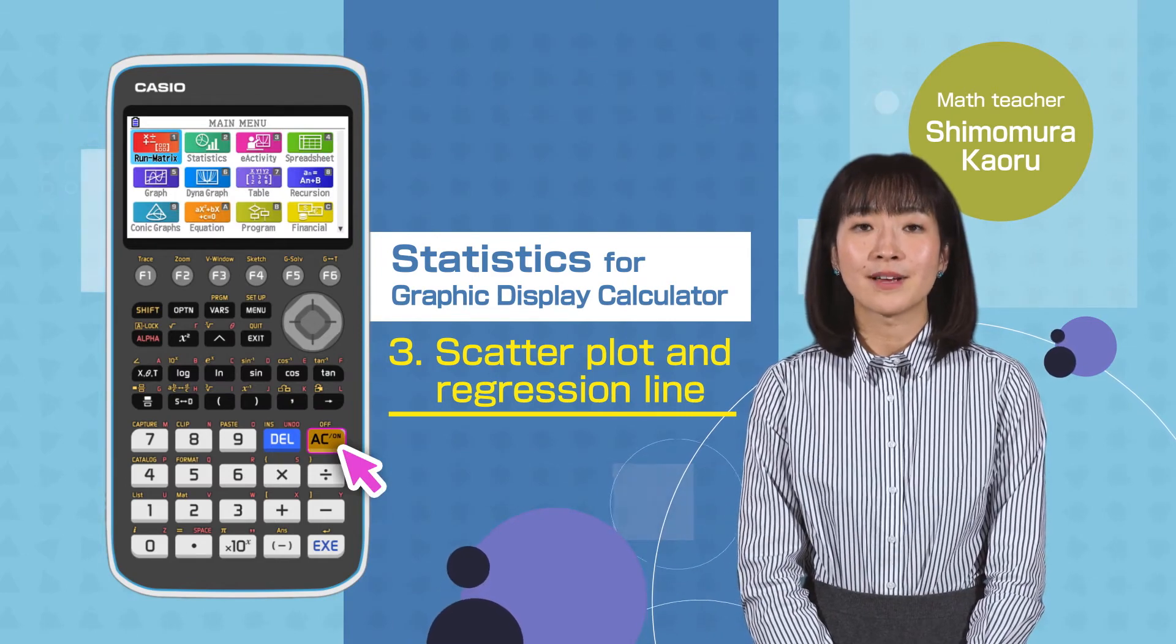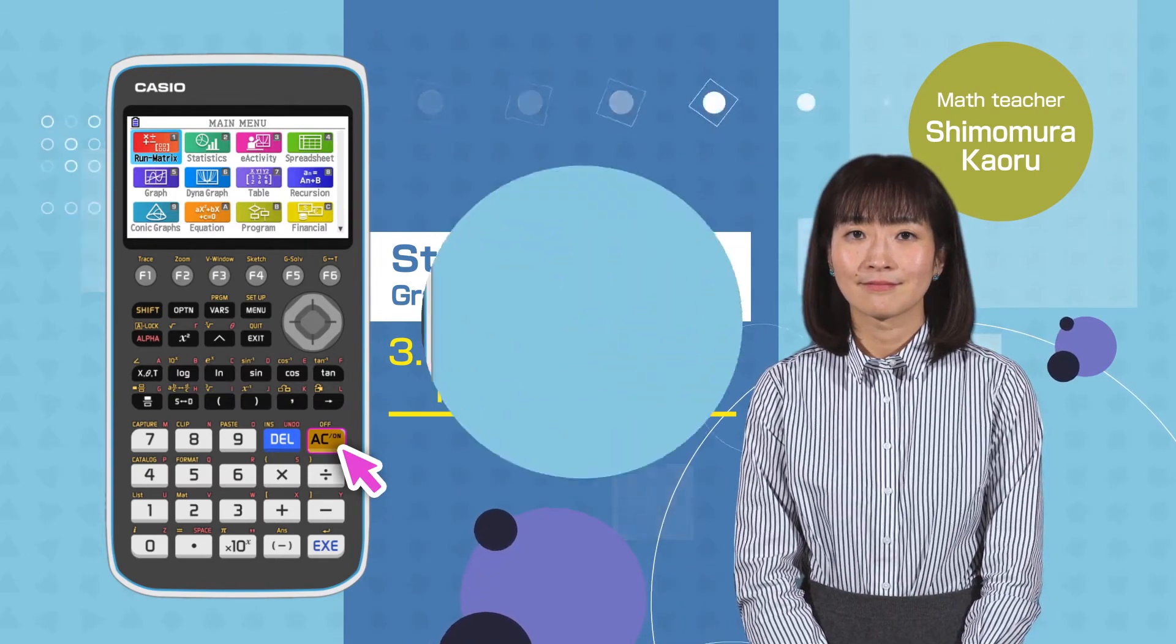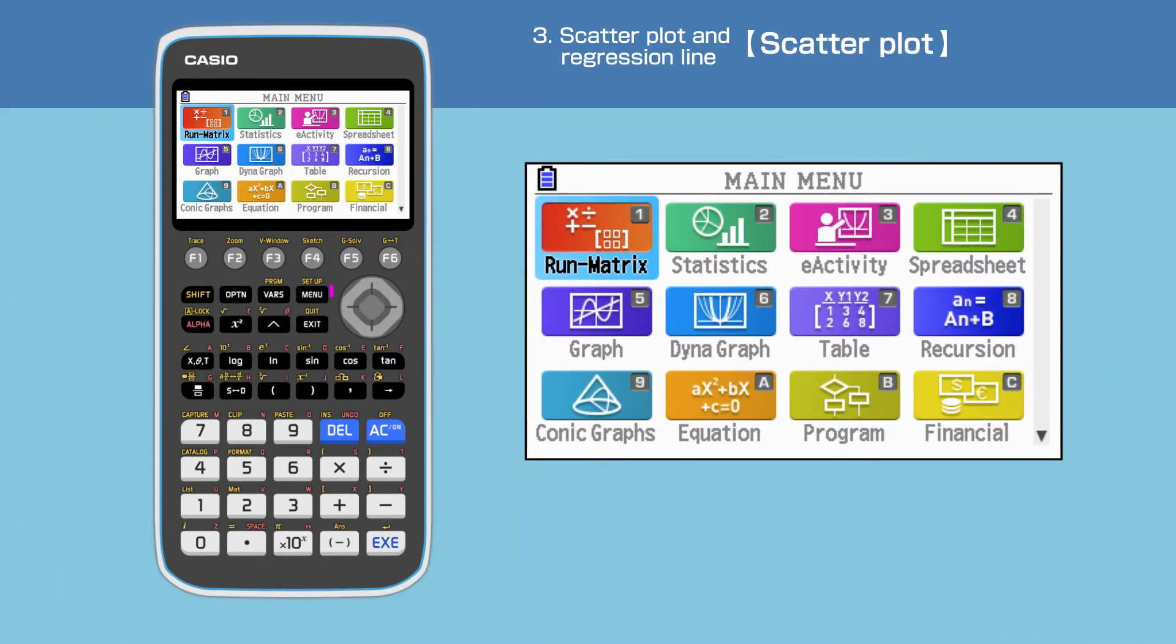Switch on your calculator by pressing the AC button. Press the menu button to open the main menu, then move the cursor or press 2 to choose the statistics function.